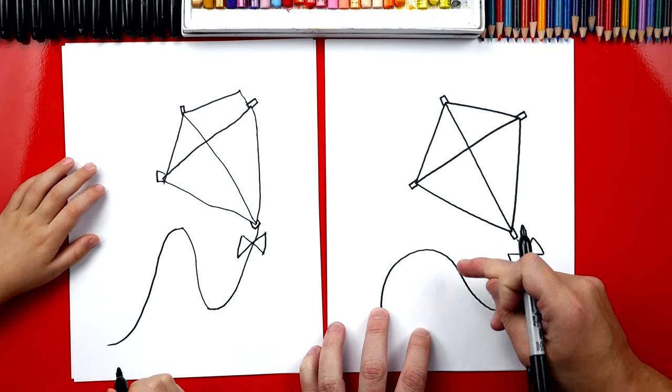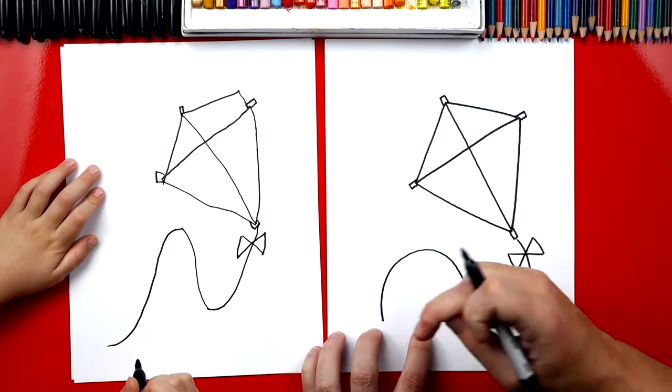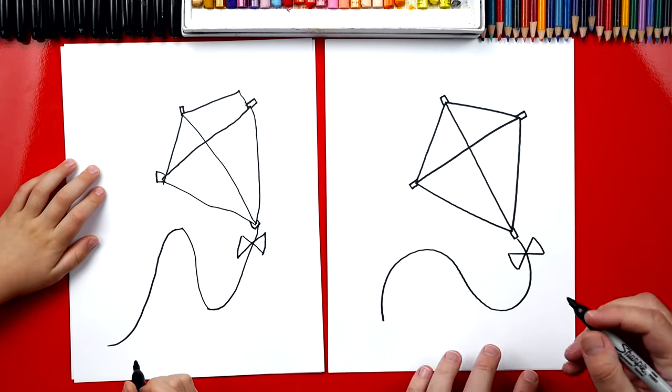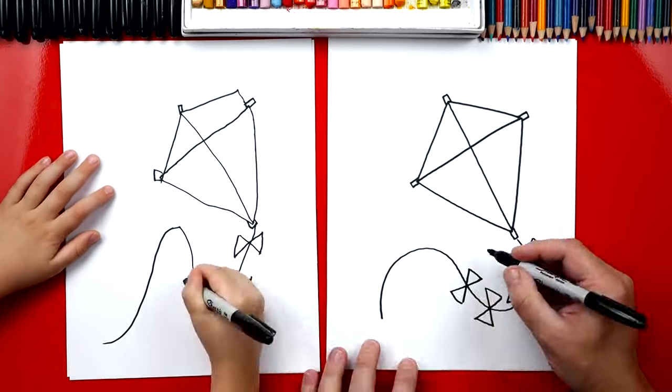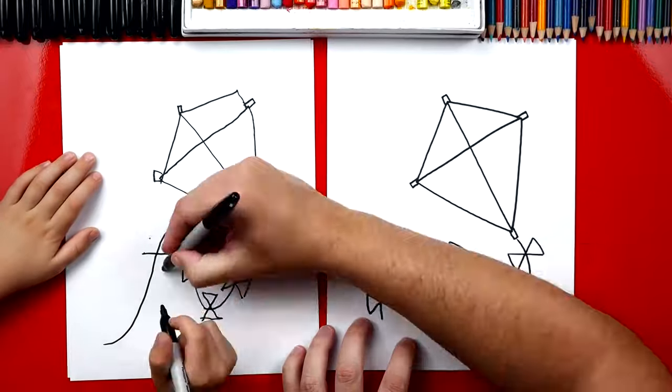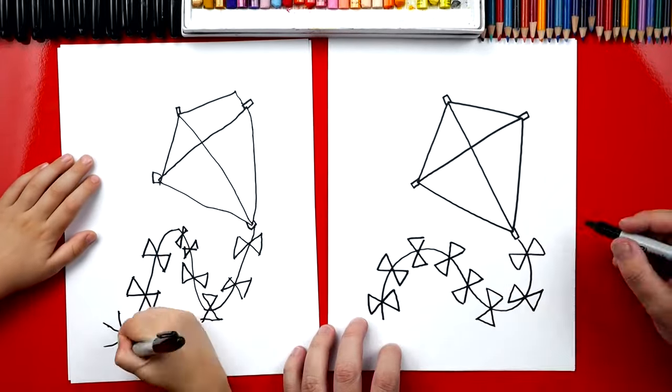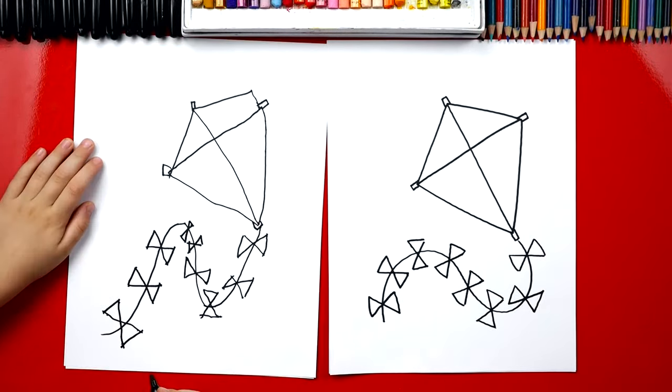Now we're going to repeat that and draw a couple more bows going all the way down our tail. We'll just repeat those same steps, okay? Yeah. All right, we did it. We finished drawing our kites.